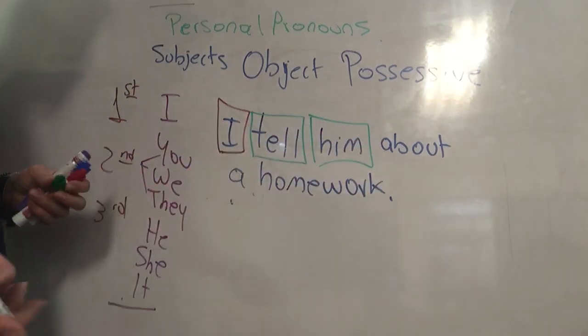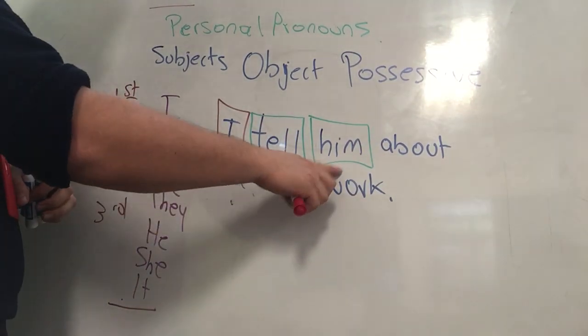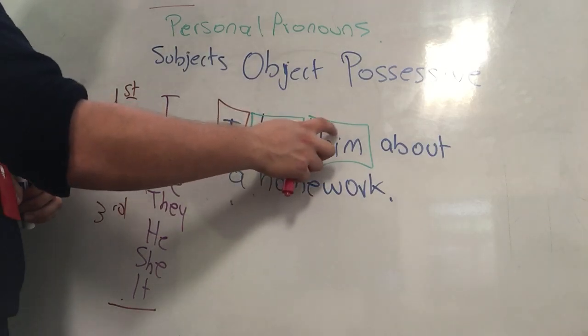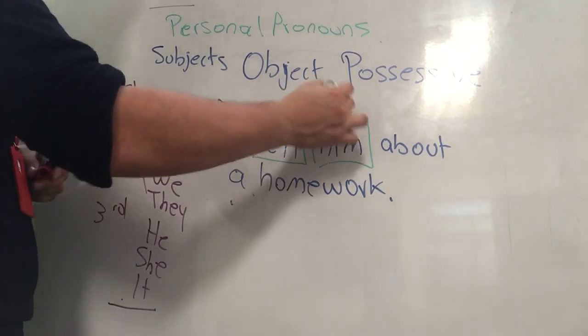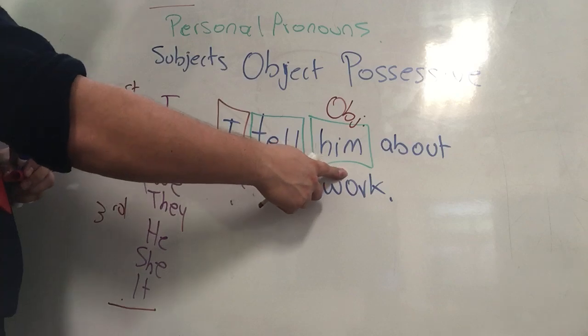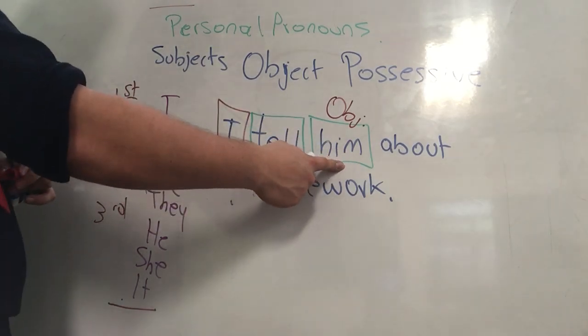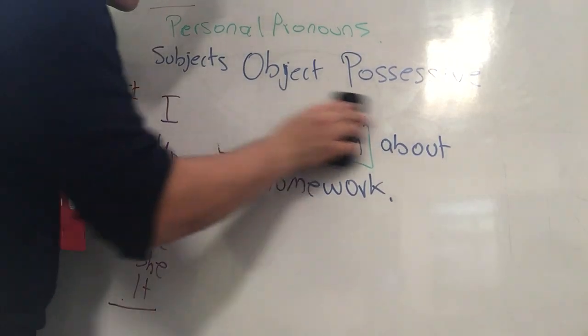What is going to be the verb? The action that the subject develops. Tell is the action that the person develops. Him is going to be the object. I know that it is a person, but we have here to recognize that it is not the developer of the action. He receives the action. For that reason, that is the object pronoun. Because the person is not going to work as a subject, he works as an object.